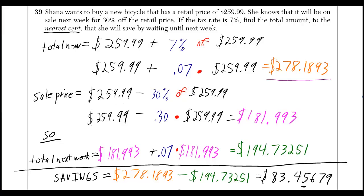The sale price would be $259.99 minus 30%, so that's minus 0.30 times $259.99. If you do that in a calculator, you'll get $181 point blah blah blah. Then you've got to add tax on that, so add 0.07 times $181 point blah blah blah, and you get $194 point blah blah blah.